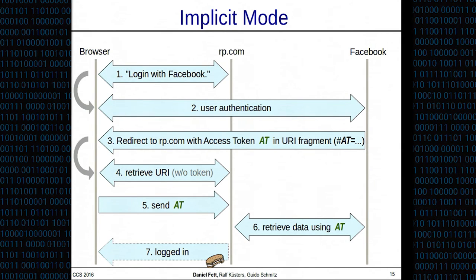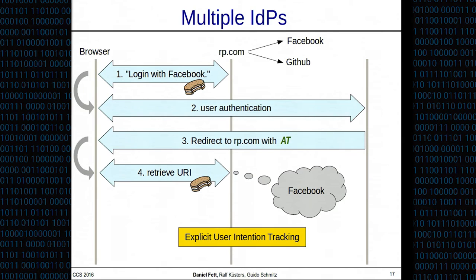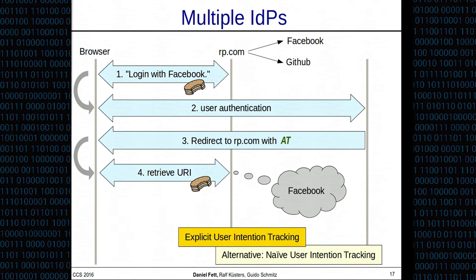OAuth can also be used with multiple identity providers. A relying party may allow users to sign in using Facebook or GitHub, for example. In the first step, the user selects which identity provider to use. After the flow completes, the relying party needs to remember which identity provider the user chose, which it does by storing this data in a session — the session ID is put into a cookie sent to the browser. This is called explicit user intention tracking. There's also a naive variant discussed in the paper, but for this talk we focus on explicit user intention tracking.